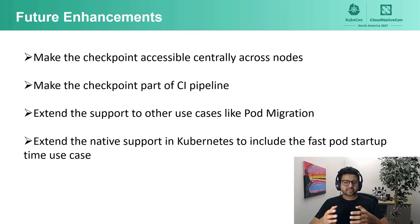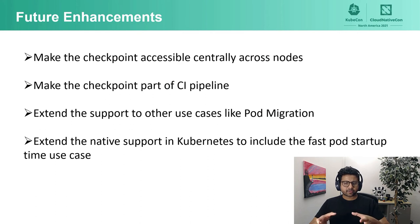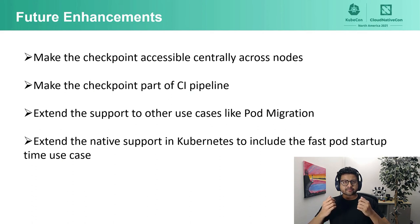What are some of the enhancements we envision in the future with a non-native approach? With our initial approach we decided to make checkpoint available on the node, but it could be made available to external storage to save on checkpointing for every node — this is something we plan to take on moving forward. We can also go one step further and make it part of the CI/CD pipeline to get it closer to integration and avoid late discoveries. The current non-native approach targets the fast startup use case but could eventually be extended to pod migration as well. Conversely, the current native support in Kubernetes targets pod migration but could be extended to support fast pod startup use cases as well.